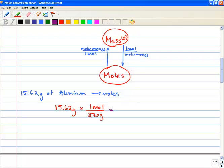So then we are going to cancel out our grams, and we're left with moles. And so we go 15.62 times 1 divided by 27, and we get 0.5785 moles of aluminum.